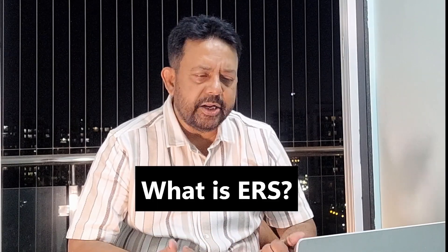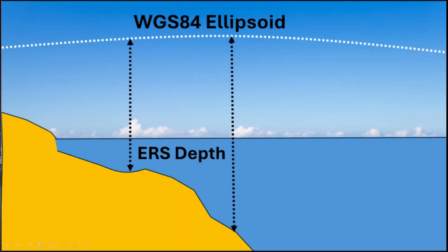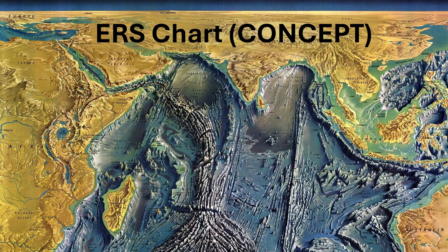In our traditional survey, we are pretty much reliant and dependent on the local datum and the tide, as we need to deduct the tide from the measured depth. In the ERS, we connect all our depths and soundings to the ellipsoid. So in the ERS, we are not measuring the depth — we are trying to measure the separation, the distance from the seabed to the ellipsoid.